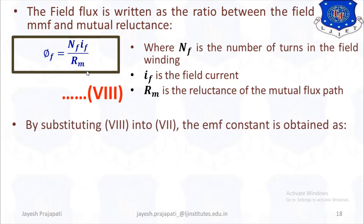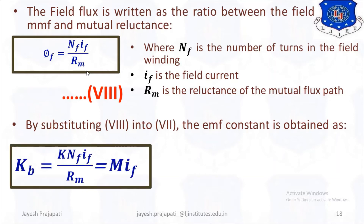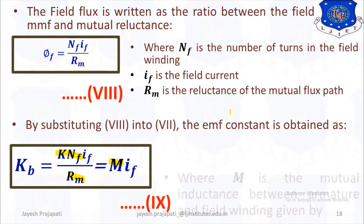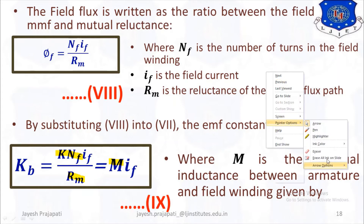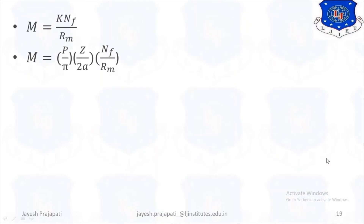Substituting equation 8 into equation 7, the EMF constant is obtained as KB equals K·NF·IF divided by RM. We replace K·NF/RM by the mutual inductance M, giving KB equals M·IF, taken as equation 9, where M is the mutual inductance between armature and field winding.